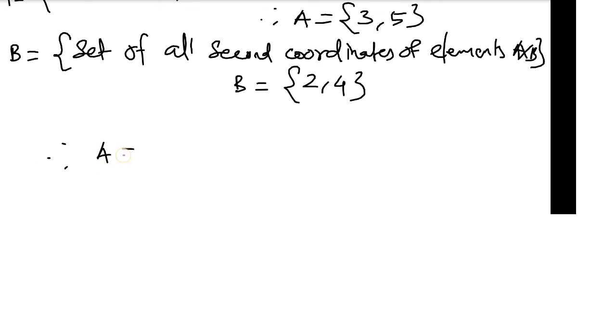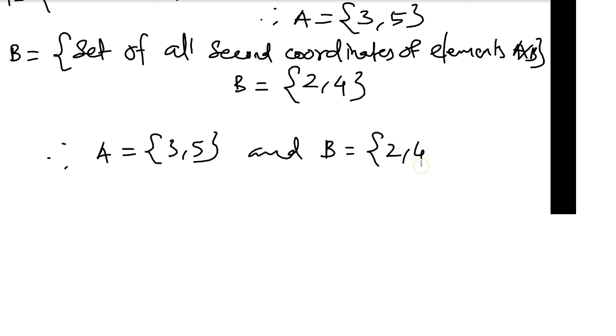Therefore, A equals {3, 5} and B equals {2, 4}. Okay, that's all.